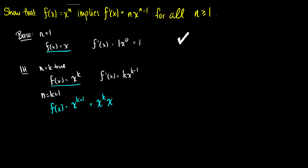If f(x) = x^k times x, then by the product rule we take the derivative of the first — that's kx^(k-1) from our induction hypothesis — times the second, then add the first times the derivative of the second, which is just 1. You might think: if we don't know the power rule is true, how can we use the product rule? Well, we can, because we've already checked the base case and the induction hypothesis, which are the only things that appear in our derivative for n = k+1.